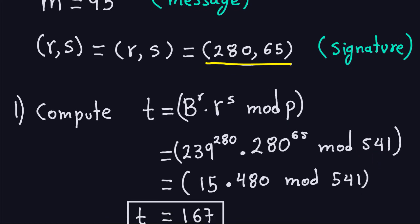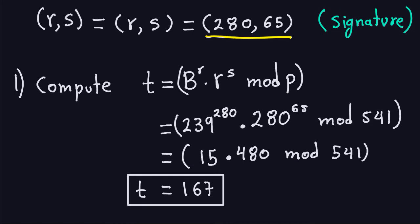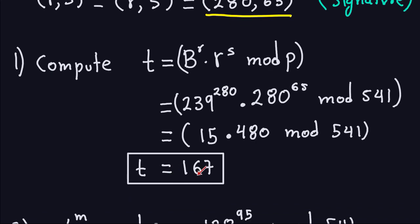If you do the modular exponentiation, you take 239 to the 280 modulo 541. This modular exponentiation gives you 15. In a similar way, 280 to the 65 modulo 541 gives you 480. And then you multiply these two numbers, and then you take the modulo 541, and you get 167. You can double-check this in a computer, Java, or you can use Wolfram Alpha to do these verifications.